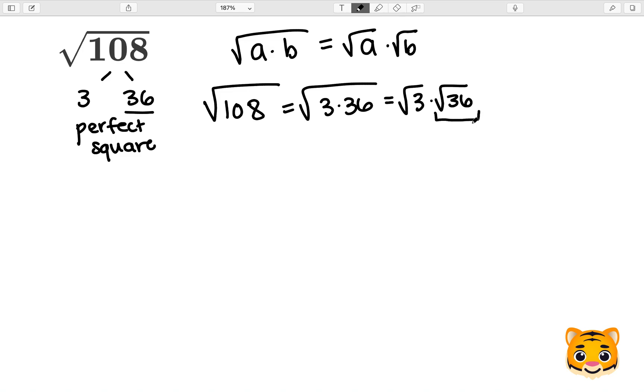Because 6 times 6 equals 36, the square root of 36 is 6. Therefore, we can write this as 6 times the square root of 3. This is our simplified version of the square root of 108.